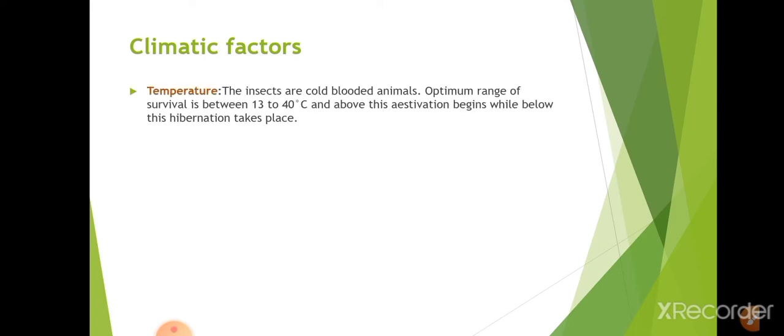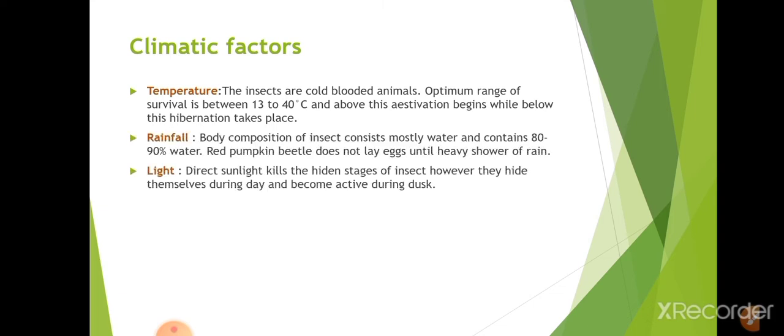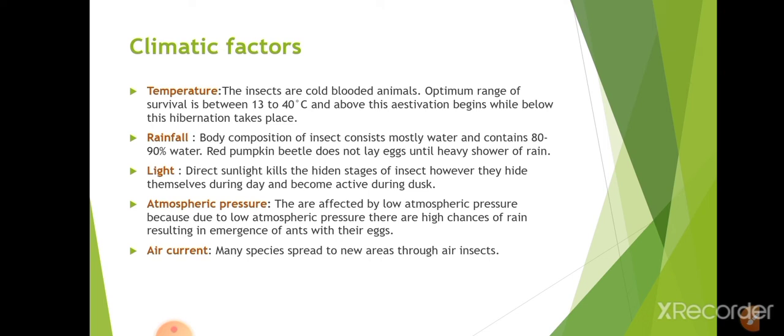The first climatic factor is temperature. Insects are cold-blooded animals; unlike warm-blooded humans, they are not able to maintain their body temperature. Their body temperature depends upon the environment. The optimum range of survival is between 13 to 40 degrees Celsius, meaning insects are mostly active within this range.